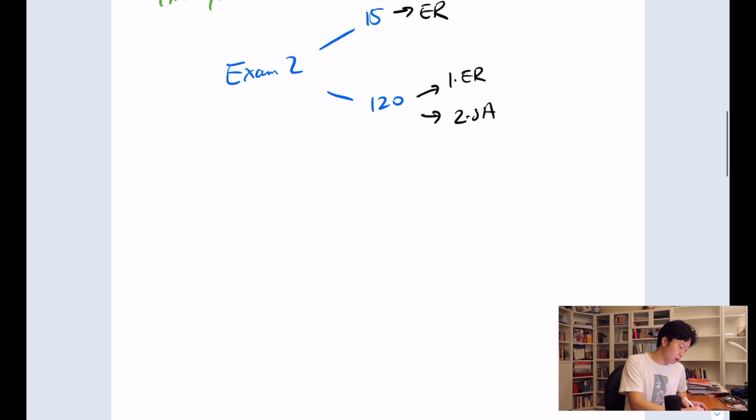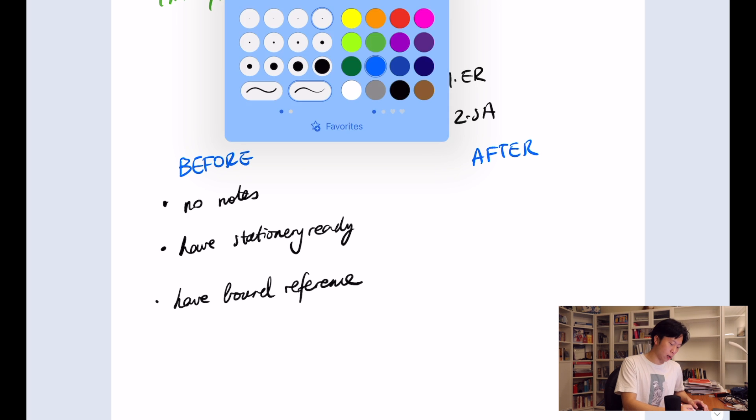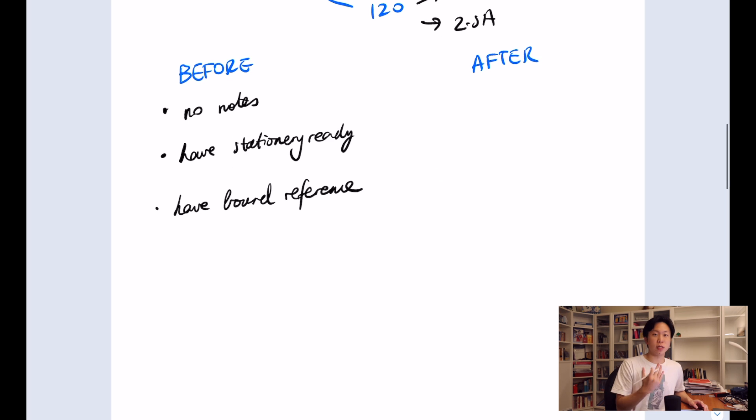How can you be sitting it in exam conditions? Well, before sitting the practice exam you want to have no notes, have your stationery ready, have your bound reference if you're using it - essentially all the materials that you would have in the actual exam. You also want to have a watch as well to keep track of time. You don't want to use a clock because you might be sitting really far away, and you don't use an alarm because you'll be bringing a watch.